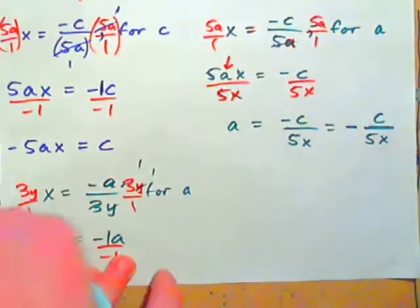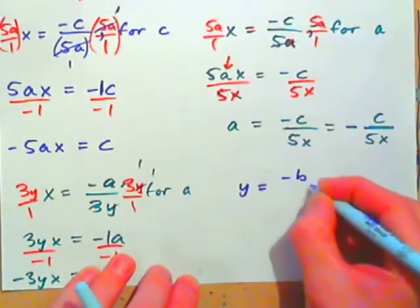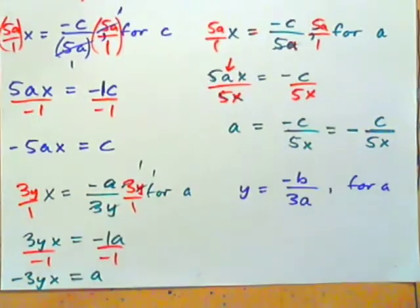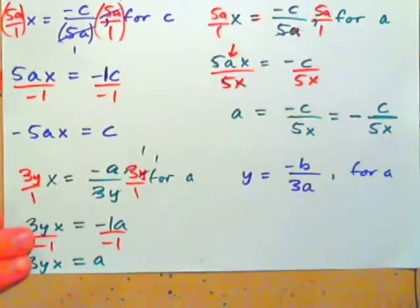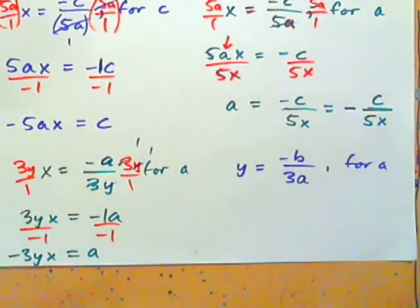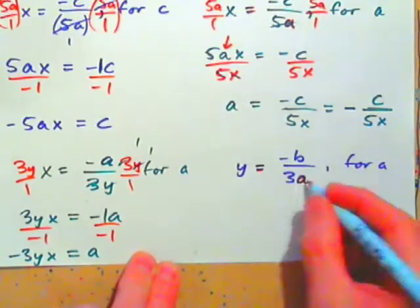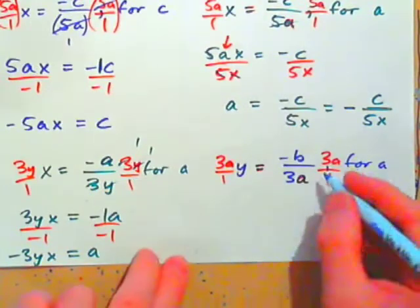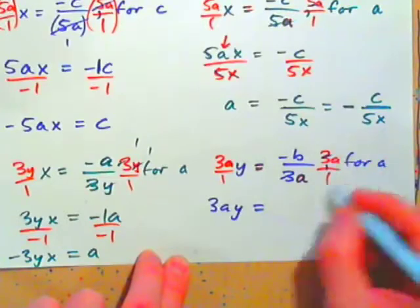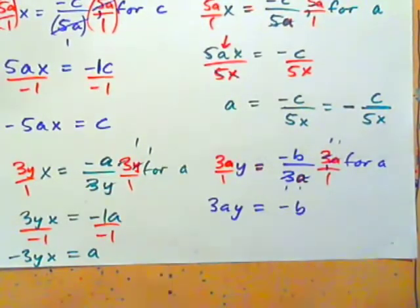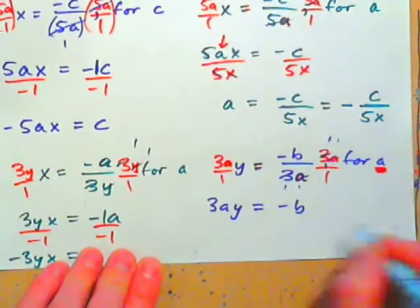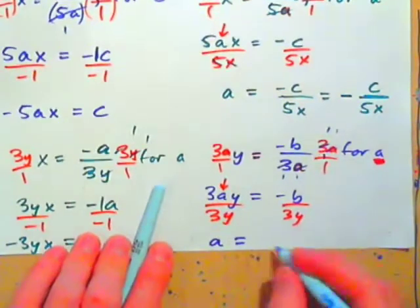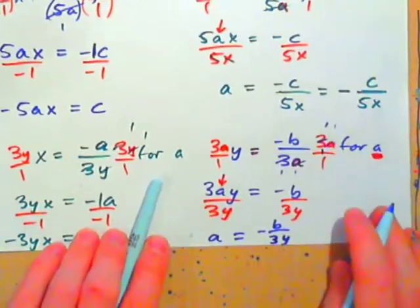Practice: Y equals negative B over 3A — solve for A. Whenever we have an equation with fractions, get rid of them by multiplying both sides by the denominator, 3A over 1. On the left: 3AY; on the right the 3s and As cancel, leaving negative B. Put an arrow on A, divide both sides by 3Y, and we get A equals negative B over 3Y.